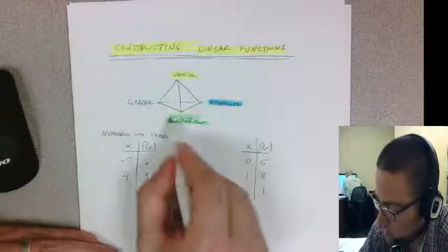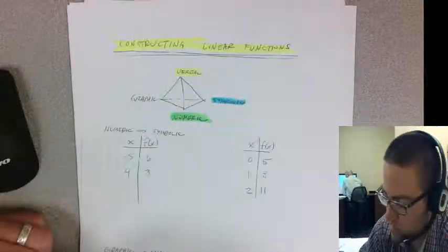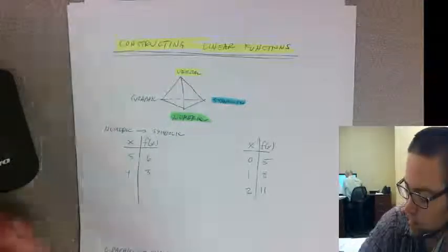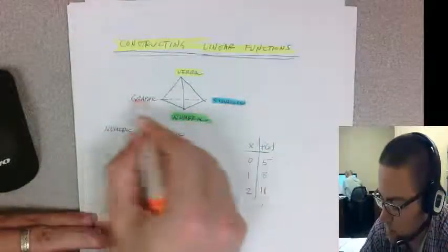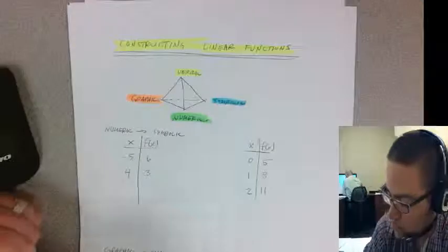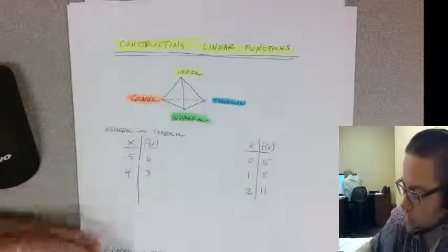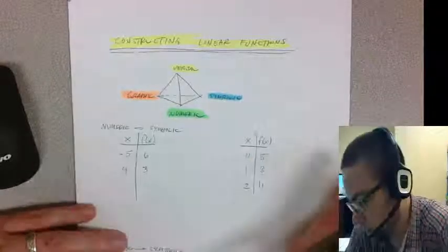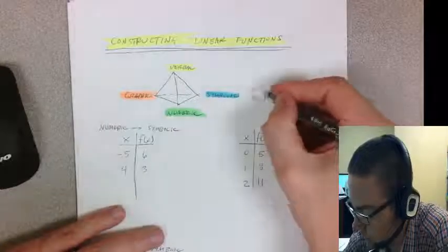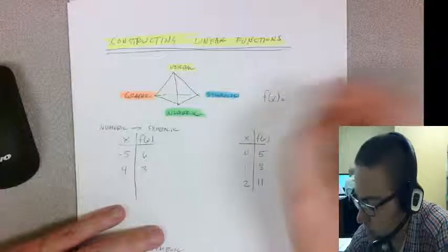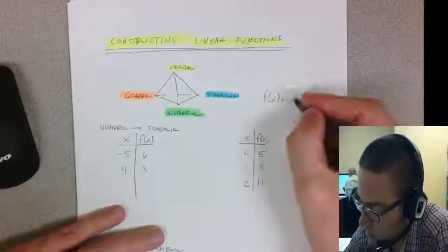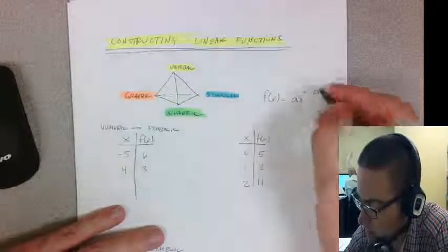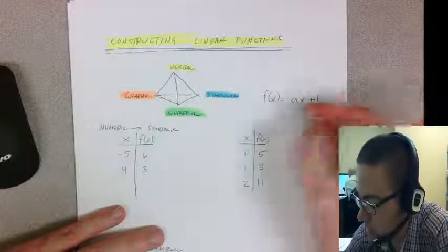What we're talking about in constructing linear functions is designing the symbolic representation. We want to get f(x) equals something times x plus some other number. Linear functions work where f(x) = ax + b, where